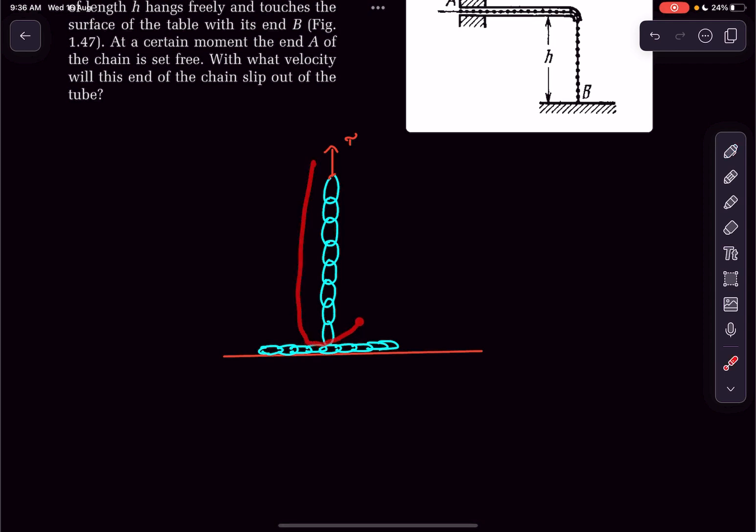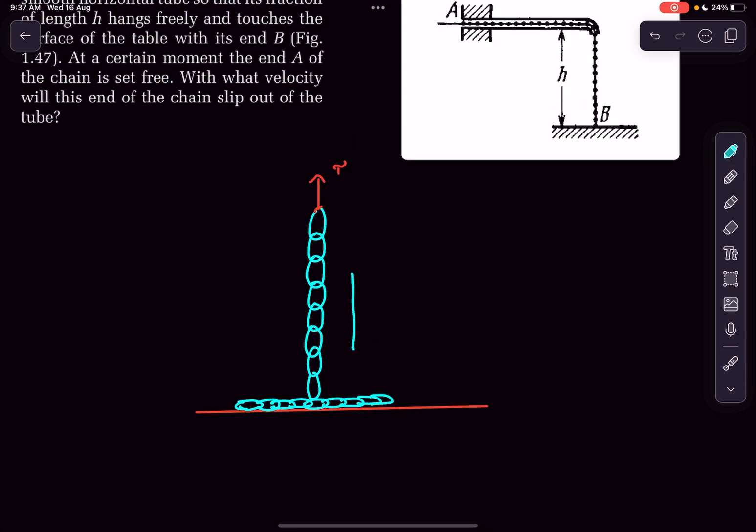We are drawing the FVD of this particular part. On this part, there is no force acting on the last link, and the other force is the weight. We know this vertical height is h, so the weight of this chain is λgh, where λ is the uniform mass density.